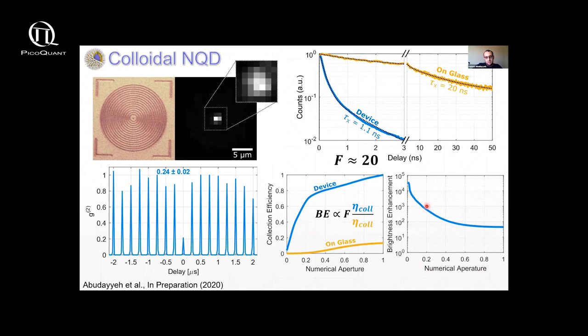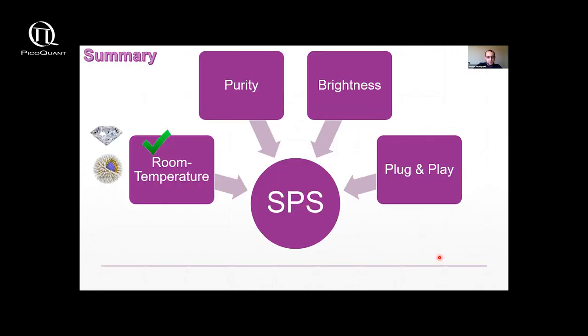So the brightness enhancement is above 1000 for low NAs. But even for an NA of 0.5, we got an enhancement of over 80 times what you would get on glass. So hopefully I have convinced you that we've been able to successfully at least improve one aspect of room temperature sources, which is brightness. And if we take this lifetime and project what we would get, we would achieve something like 10^8 photons per second using this.